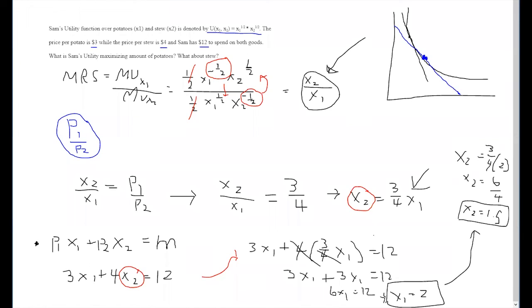To recap, we took our MRS, we set it equal to our price ratio, we took this equation, plugged it into our budget constraint, and then solved for our optimal amounts of both goods.